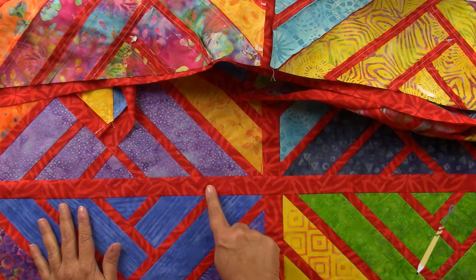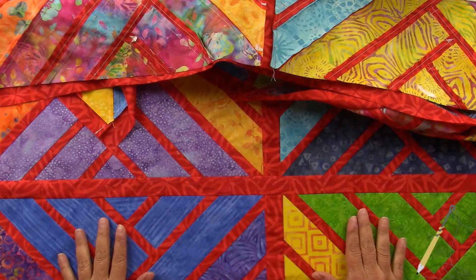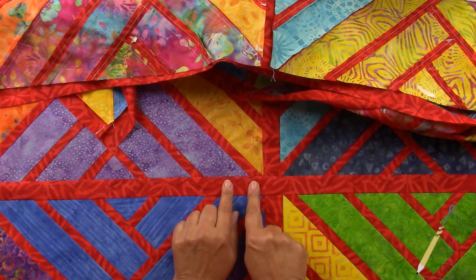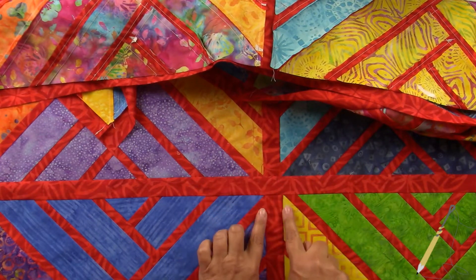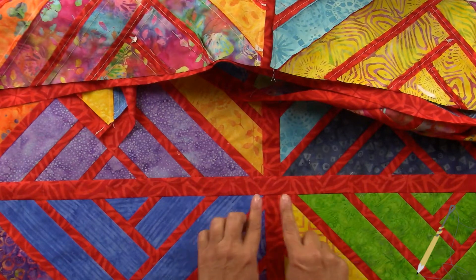Once you have stitched one of the vertical sashings to one of the columns and you're stitching the other column onto the vertical sashing, you need to take care that we are lining up the horizontal sashing. Sometimes they can be off a little bit.